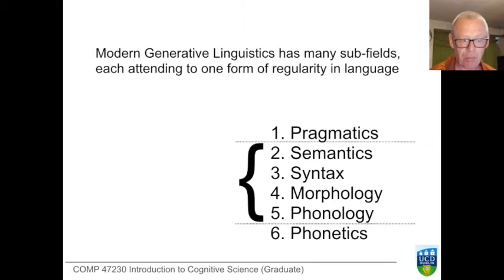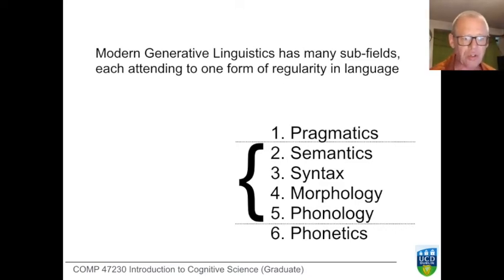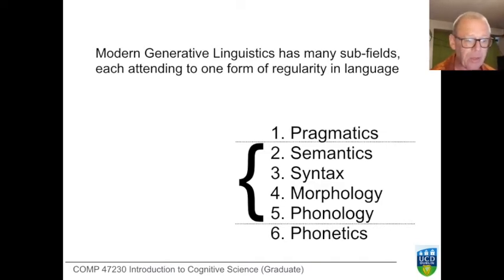Both pragmatics and phonetics are outside of the generative tradition, although they may be called upon to provide insights that are otherwise unavailable. Pragmatics and semantics both have to do with meaning, but pragmatics deals with context-bound meaning in the real world, whereas semantics deals with an abstracted, logical notion of meaning. Likewise, phonology and phonetics both have to do with sound, but phonology concerns the abstract role of sound in communication, whereas phonetics deals with actual sound — tongues, air pressure, and so on.